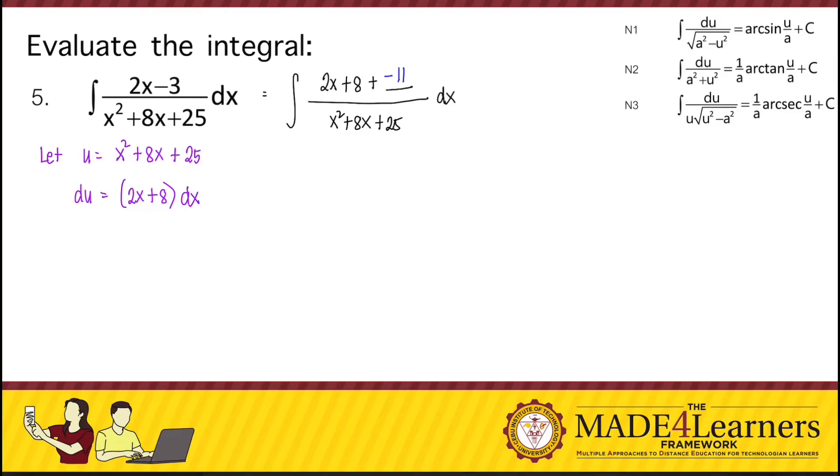Next, because we now have 3 terms in the numerator and if we just have 2x plus 8 in the numerator, we can perform integration by simple substitution. Then we are going to separate the given into two fractions. That's 2x plus 8 over x squared plus 8x plus 25 dx